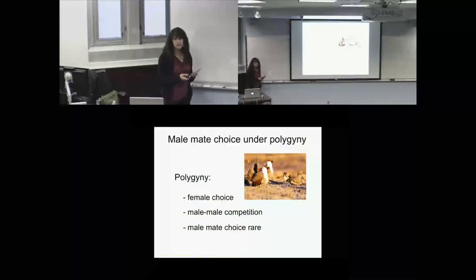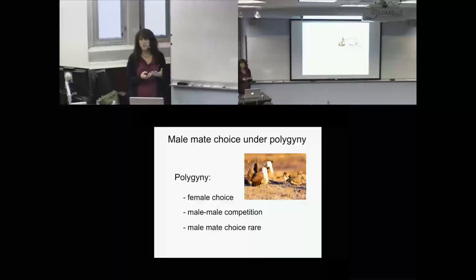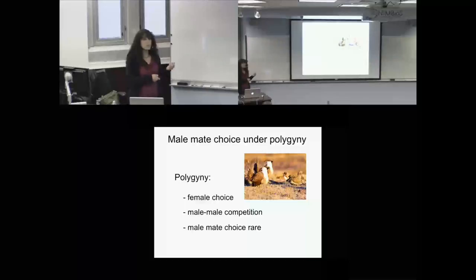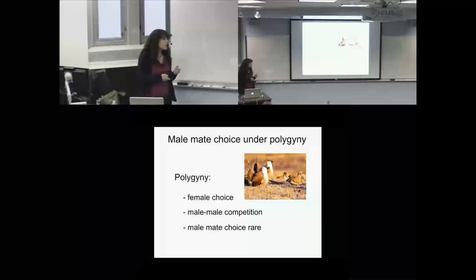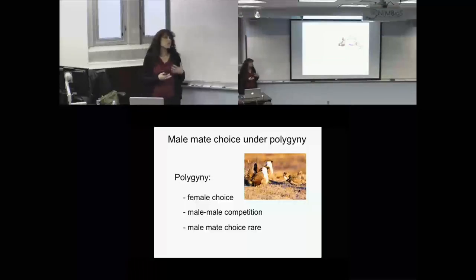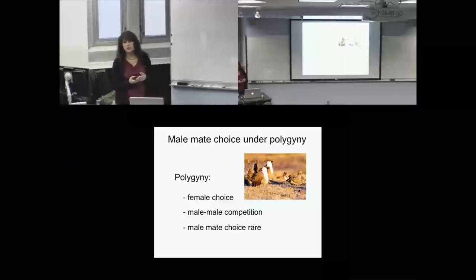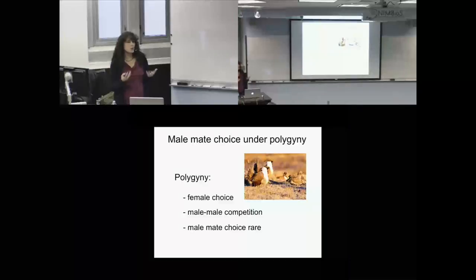Under polygyny, females are the limiting resource — there are fewer females available to mate at any one time than males. So you expect males competing over this limiting resource. There should be male-male competition, female choice, and male mate choice should be rare. But if males don't have an infinite amount of energy to put into courtship, why should males not also choose?